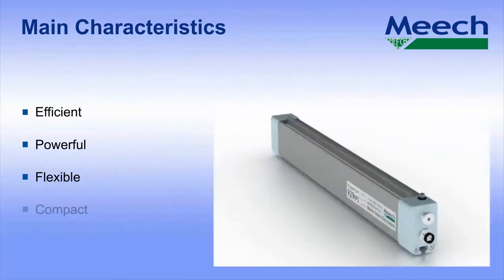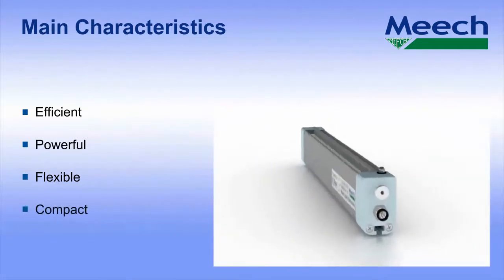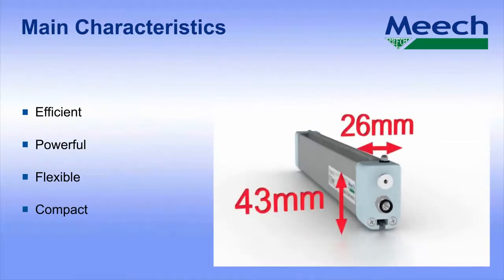It is difficult not to notice the compact dimensions of the 929 IPS. At just 26 by 43 millimeters, it is easily installed on printing and converting machinery.